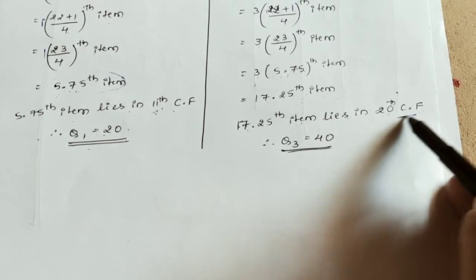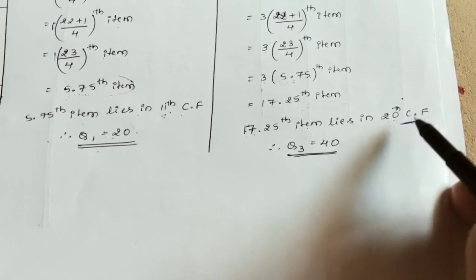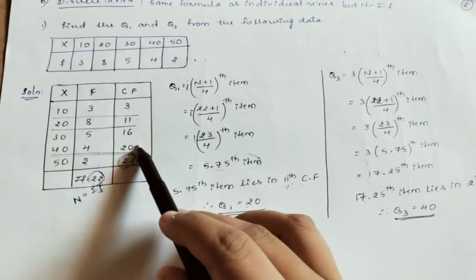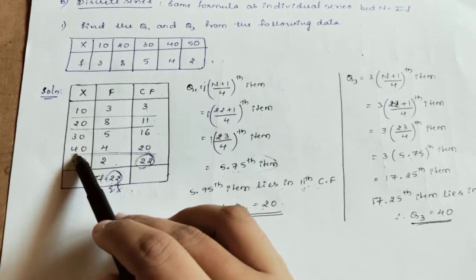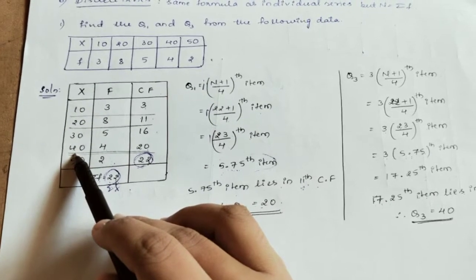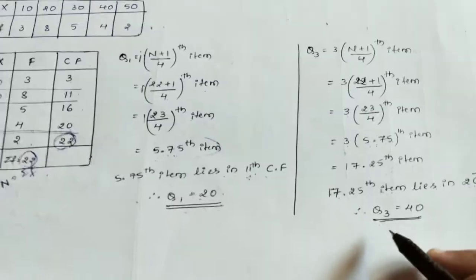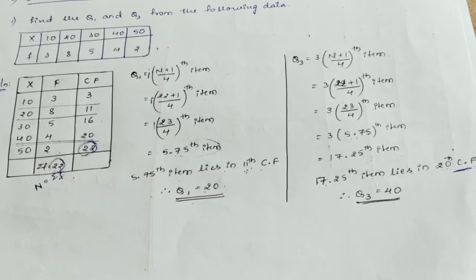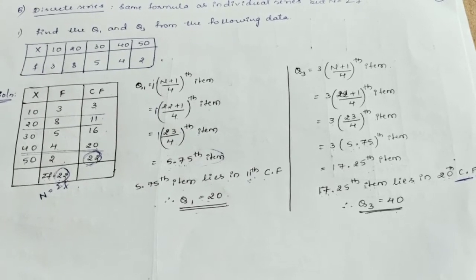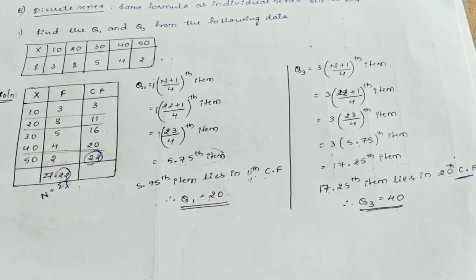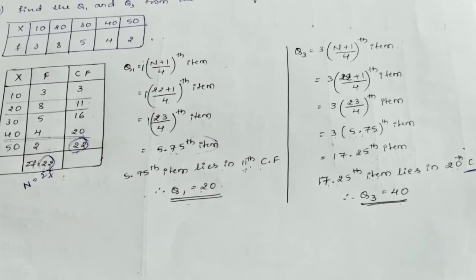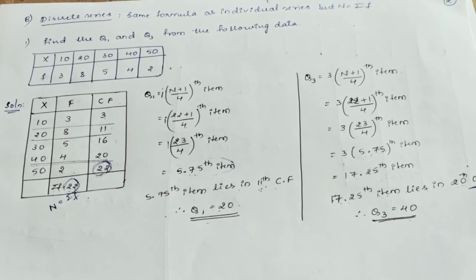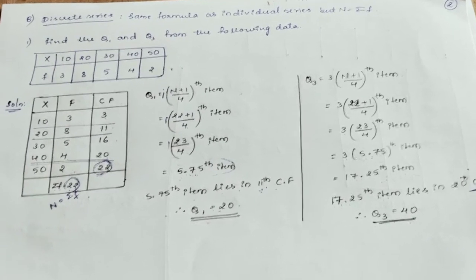The 17.25th item lies in the 20th cumulative frequency. The corresponding variate value for the 20th cumulative frequency is 40. Therefore, Q3 equals 40. This is how we calculate the quartiles in individual series and discrete series. Thank you.